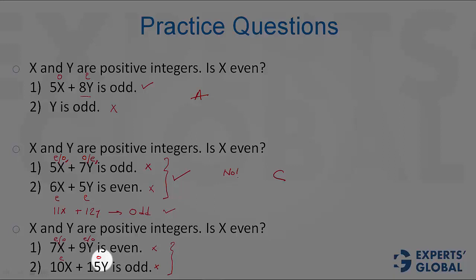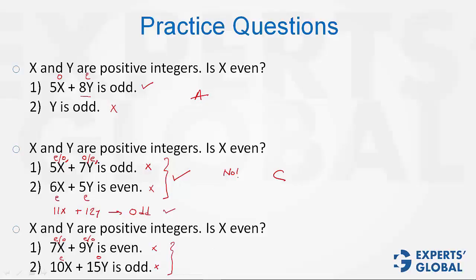Combining, we know that Y is odd, and therefore it is the second case that both are odd. So on combining, we know that X is odd, and therefore combining did give us a unique answer. The right answer is C.